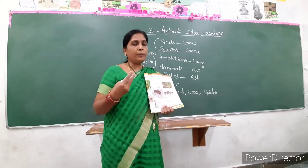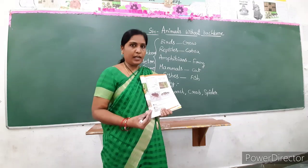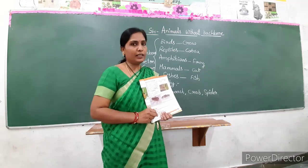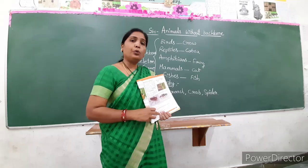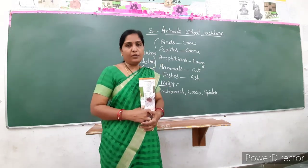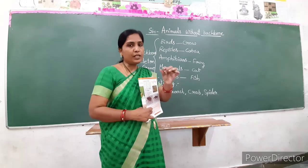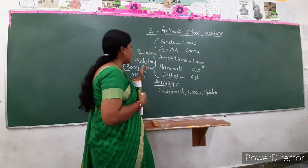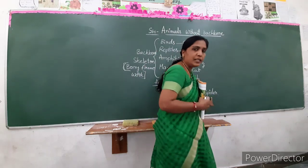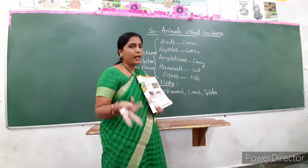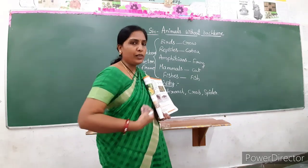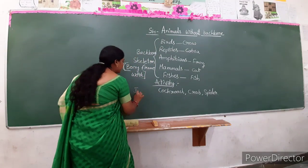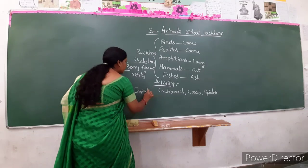In your home, if any ant or housefly or mosquito has died, you collect that dead body and examine it clearly - try to find out if they have any backbone. Observe the skeleton carefully. So these animals like cockroach, crab, and spider are not having backbone at all. So what we call these animals which do not have backbone? They are known as invertebrates.